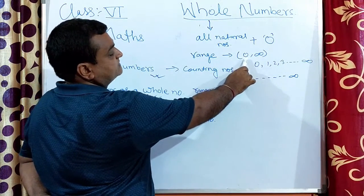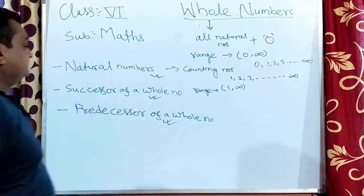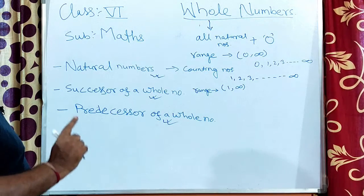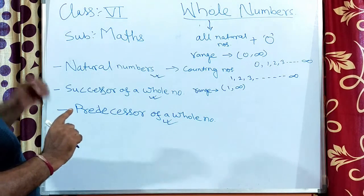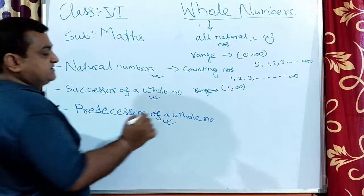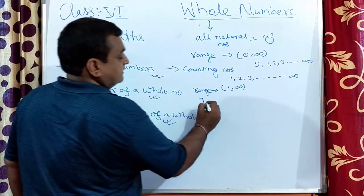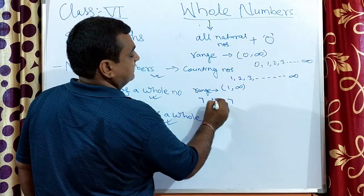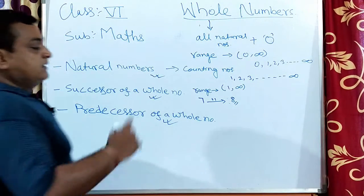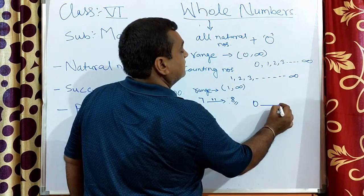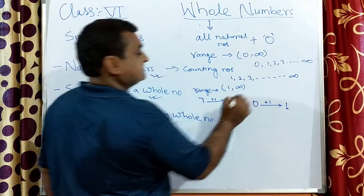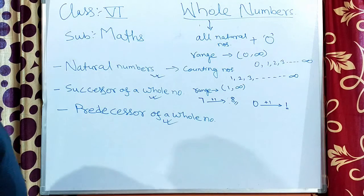The range of natural numbers is from one to infinity and range of whole numbers is from zero to infinity. Now we will learn the successor of a whole number. The successor of a whole number is obtained when we add one to the number. For example, the successor of seven is eight. If the number is zero, we add one to zero and it becomes one, so one is the successor of zero.